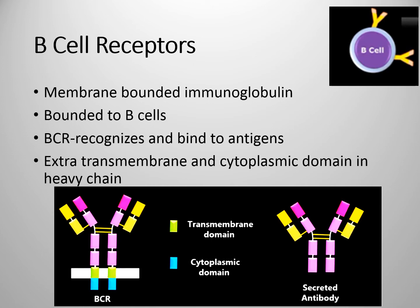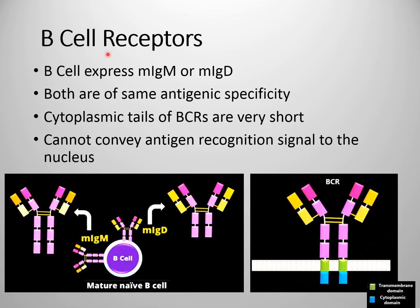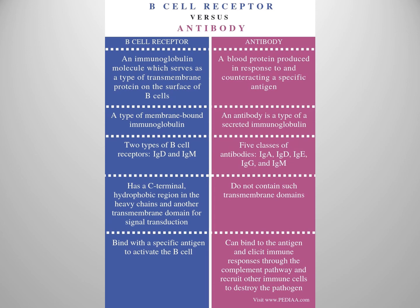B cell receptors have either IgM or IgD membrane-bounded antibodies attached to the cell surface. These IgM and IgD differ in their heavy chains; however, the Fab portion is identical, meaning both can bind to the same antigen and have the same antigenic specificity. The BCR has a short cytoplasmic domain, so it cannot convey the signal that antigen has bound to the nucleus to start transcription and translation. Therefore, B cell receptors require other accessory proteins to transmit the signal to the nucleus.